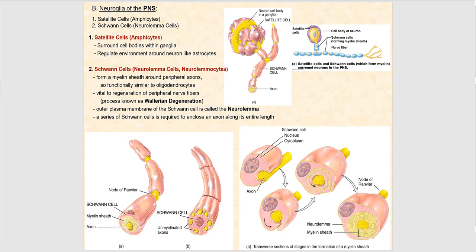Now let's look at the neuroglia in the peripheral nervous system — outside the brain and spinal cord. We have satellite cells, also referred to as amphicytes, and Schwann cells, also referred to as neurolemma cells or neurolemocytes. Satellite cells function like astrocytes — since there are no astrocytes in the PNS — and they literally cover the cell body of the neuron like a helmet, protecting the very core of that neuron. Any damage to the cell body permanently kills the neuron.